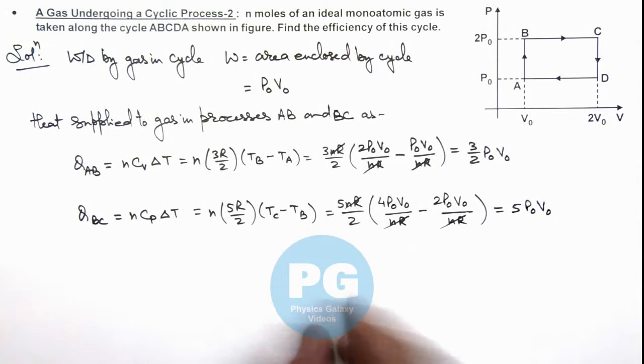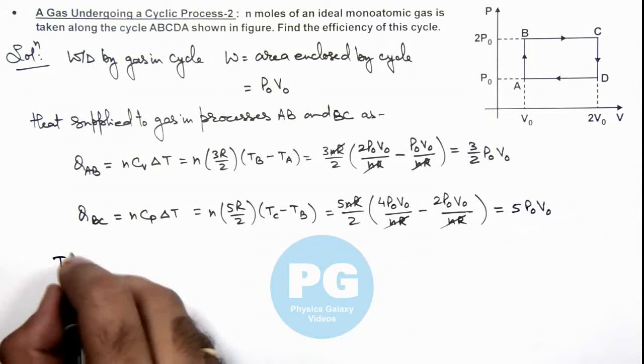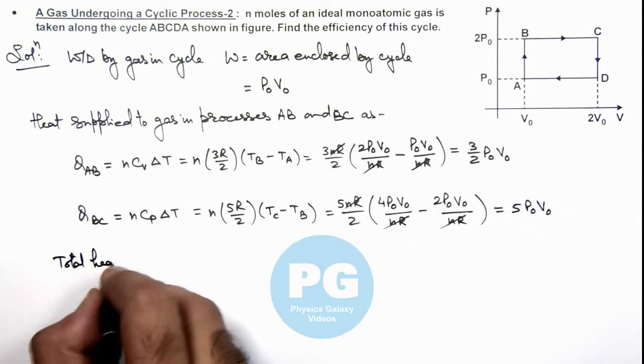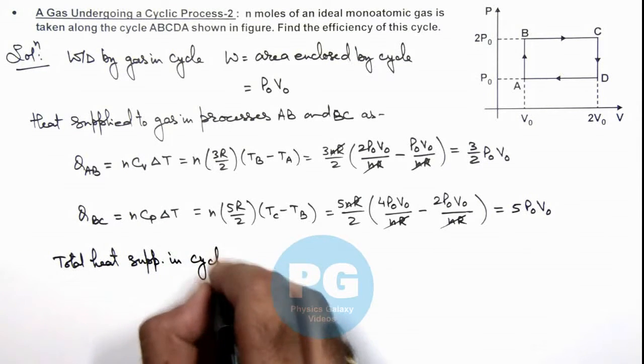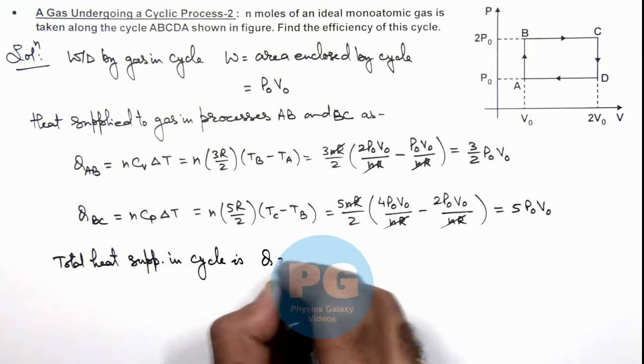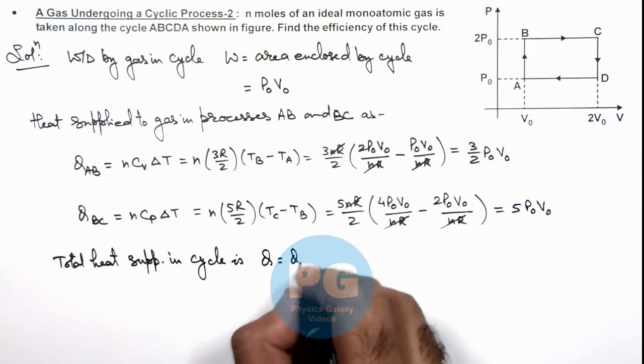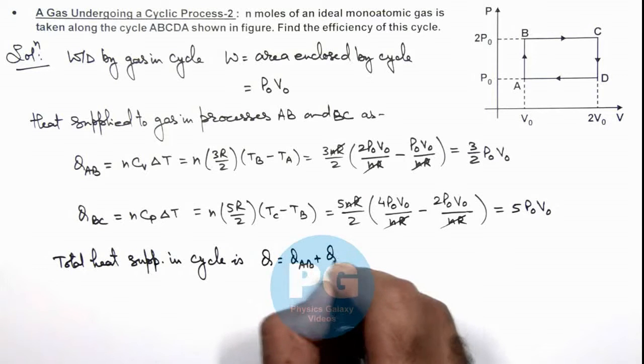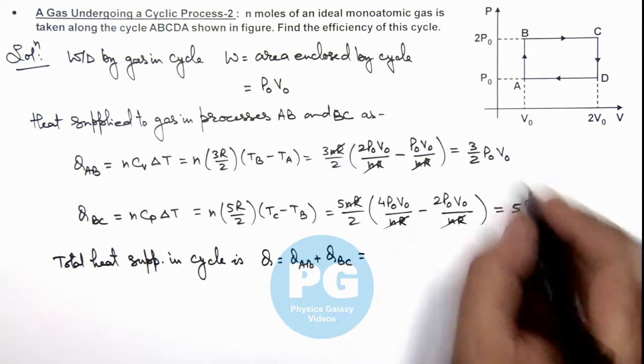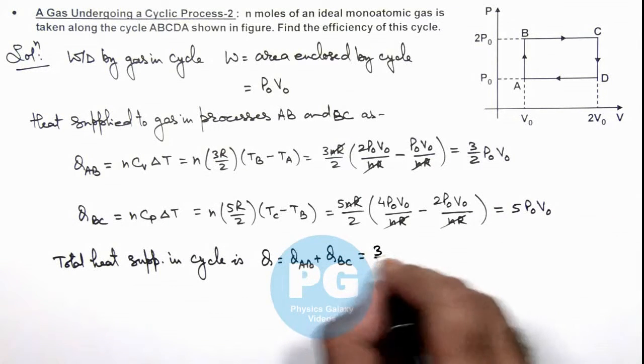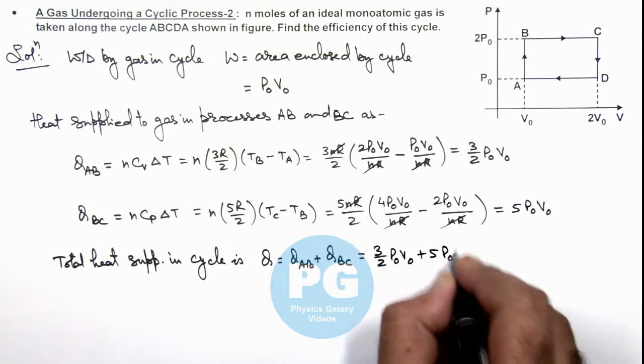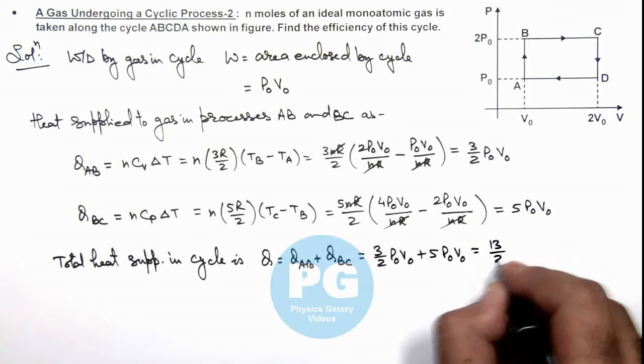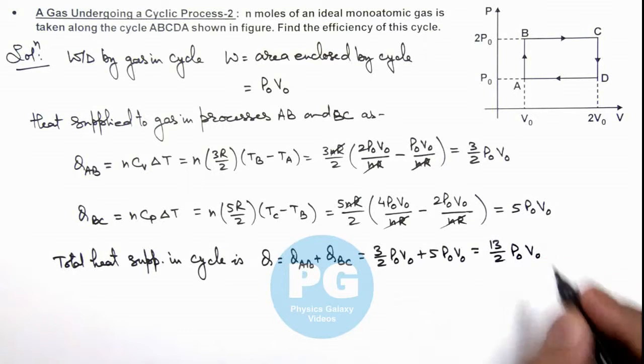So we can directly write down the total heat supplied in cycle. Total heat supplied is Qₐբ plus Qբꜿ. If you add up these values which is 3/2 P₀V₀ plus 5P₀V₀, this gives us 13/2 P₀V₀.